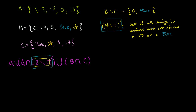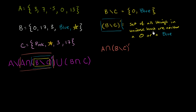Now we want to find the intersection of A and this business — the intersection of A and the set of all things in the universe that are neither a 0 nor a blue. This is essentially the things that are in both set A and that complement set. The number 3 is in set A and it's in the set of all things that are neither a 0 nor blue, so let's throw a 3 in there.